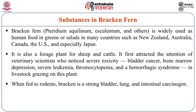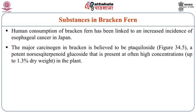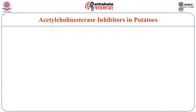When fed to rodents, bracken fern was strongly associated with causation of bladder, lung and intestinal cancers. Lactating cows fed with this fern produced milk that was carcinogenic. The major carcinogen present in bracken fern is believed to be a potent glucoside present at very high concentrations — up to 1.3% of dry weight basis in the plant. The plant also contains quercetin, kaempferol and other mutagenic compounds of the flavonoid family which can contribute to carcinogenicity, and it also contains some amount of tannins.